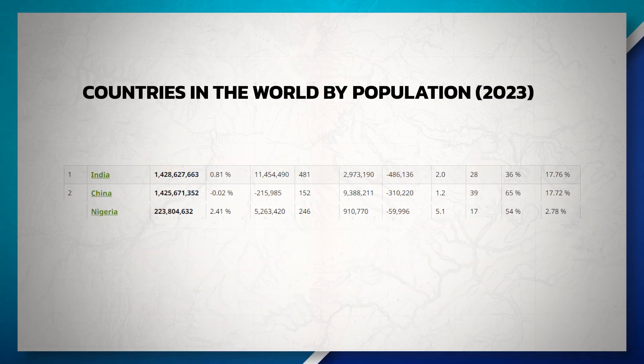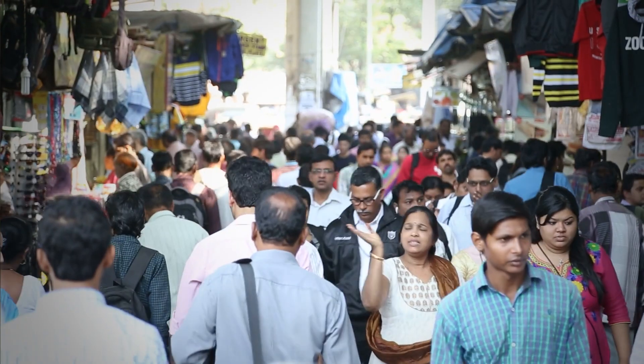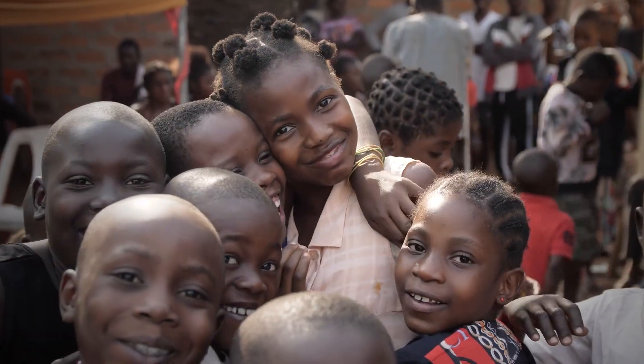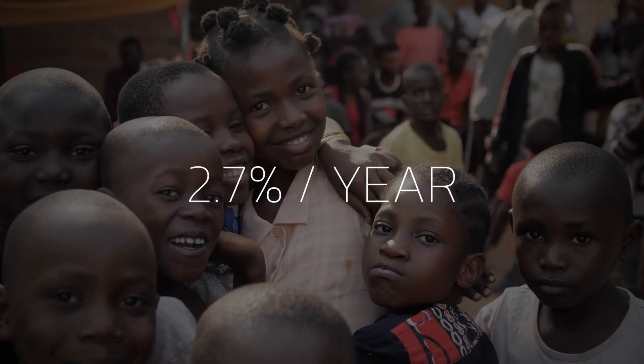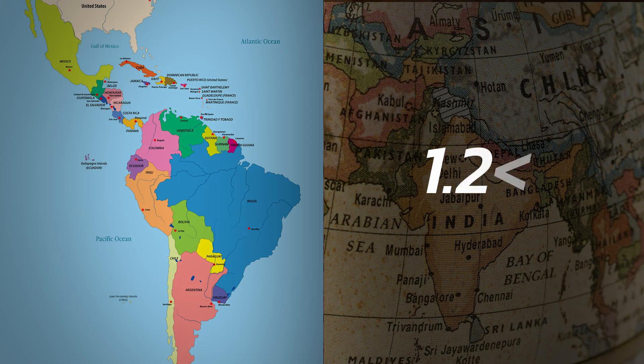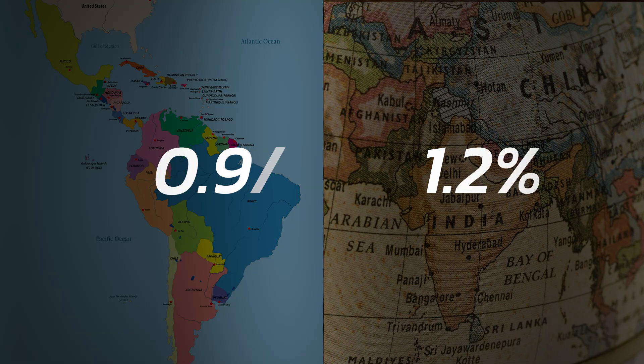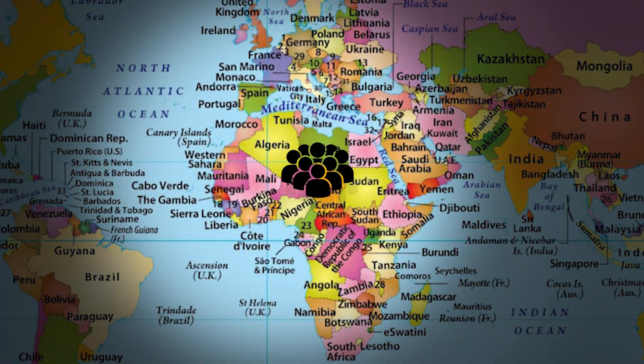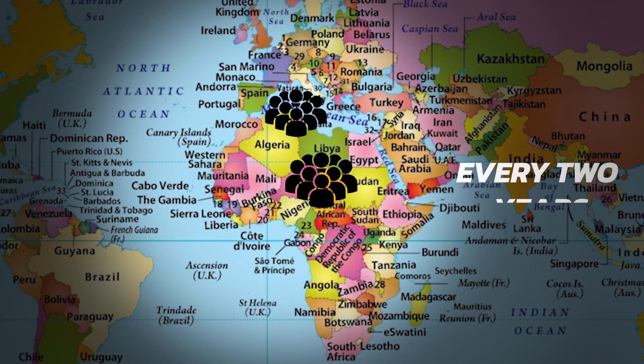Nigeria's population growth would make it the third most populous country in the world, replacing the United States. Around the world, populations are shifting. In sub-Saharan Africa, the population is growing 2.7% a year, which is more than twice as fast as South Asia and Latin America, which are currently growing at 1.2% and 0.9%. To put that in perspective, Africa is adding the population of France every two years.